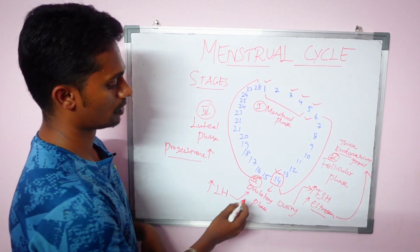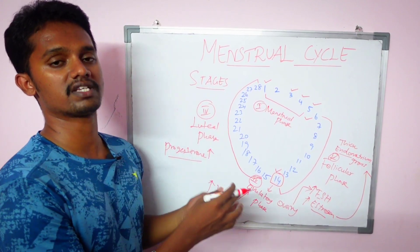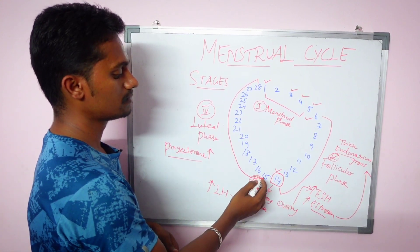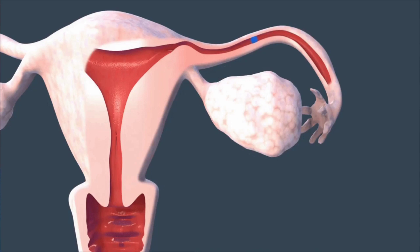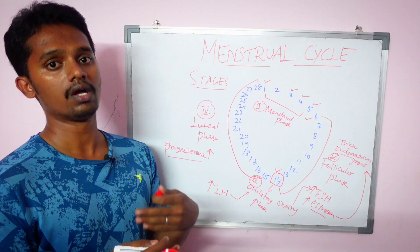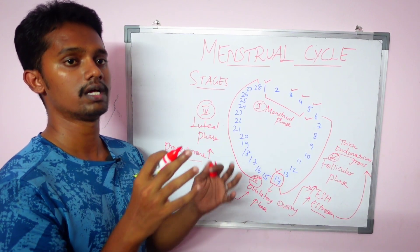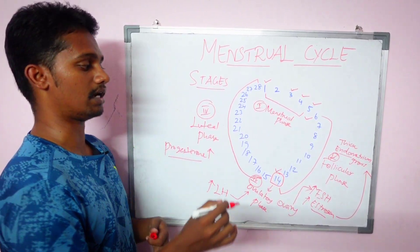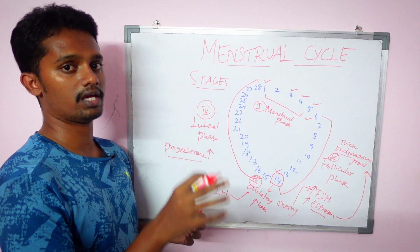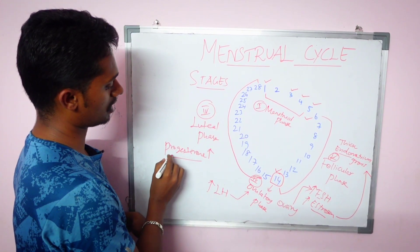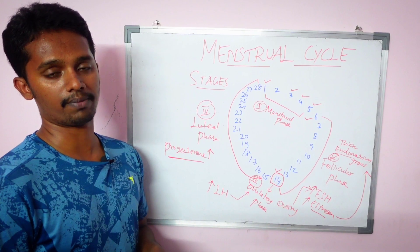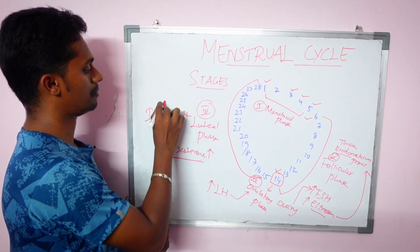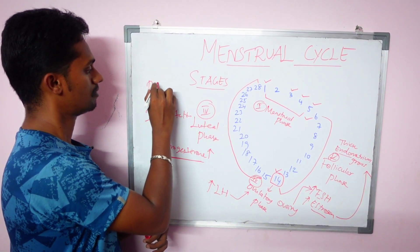After ovulation in phase 3, an egg cell is released. If a sperm cell meets the egg, they form a zygote — this is called fertilization. The fertilized egg will then undergo implantation into the thick endometrium. With progesterone support, the implantation is successful and pregnancy begins.